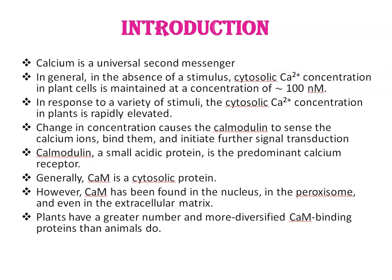Generally, calmodulin is a cytosolic protein. However, calmodulin has been found in the nucleus, in the peroxisome, or even in the extracellular matrix. Plants have a greater number and more diversified calmodulin binding proteins than animals do.